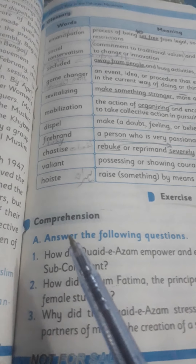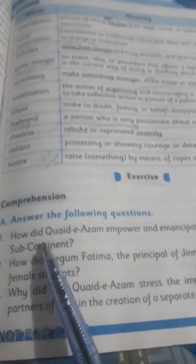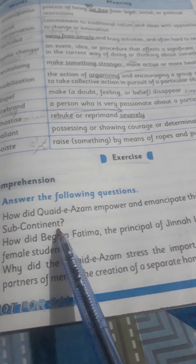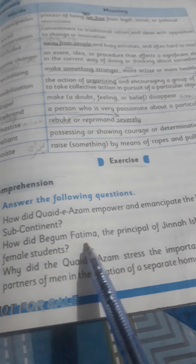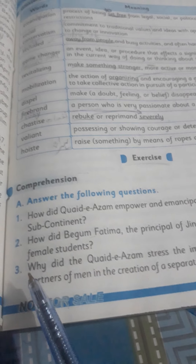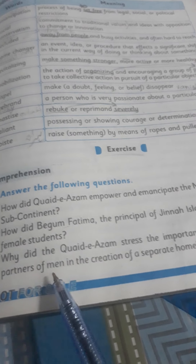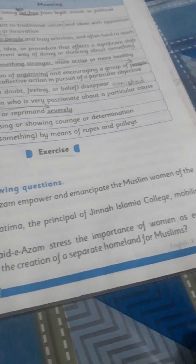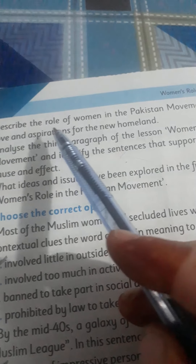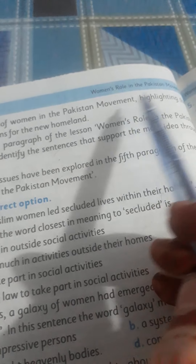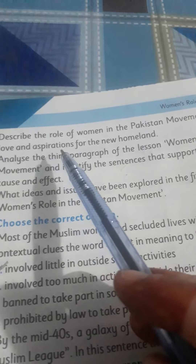Now come to exercise number 2, which is comprehension — Answer the following questions. Question 1: How did Quaid-e-Azam empower and emancipate the Muslim women of the subcontinent? Question 2: How did Begum Fatima, the principal of Jinnah Islamiyah College, mobilize female students? Question 3: Why did Quaid-e-Azam stress the importance of women as equal partners of men in the creation of a separate homeland for Muslims? Question 4: Describe the role of Muslim women in the Pakistan movement, highlighting their love and aspiration for their new homeland.